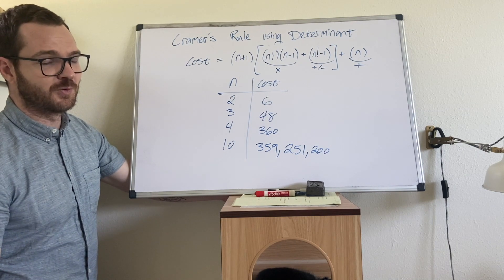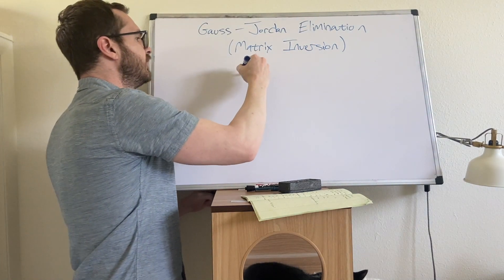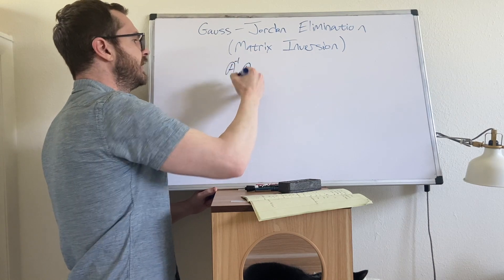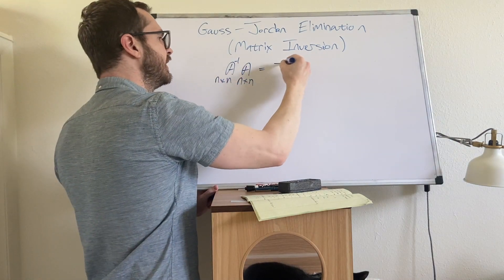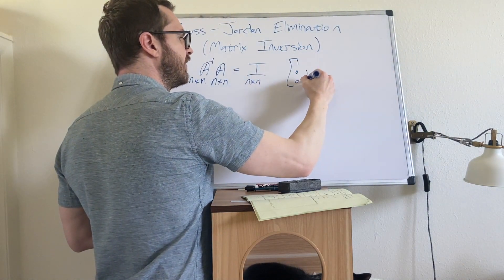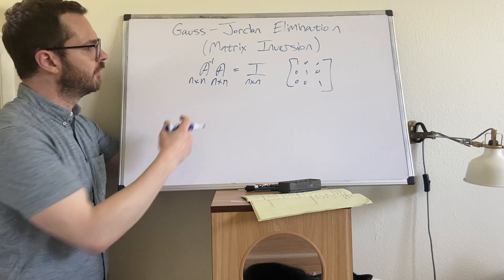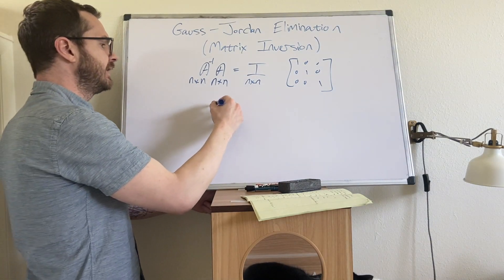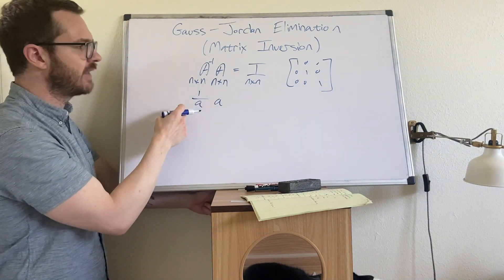Let's move on and talk about Gauss-Jordan. The Gauss-Jordan elimination method we usually call matrix inversion. Suppose you have a square matrix A of dimensions n-by-n, and you find A-inverse such that A times A-inverse equals the identity matrix — ones on the diagonals, everything else zero. This identity matrix is the linear version of one. In scalar form this is like taking a number A and multiplying by one-over-A.